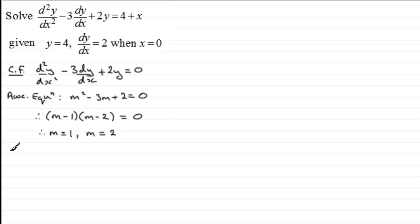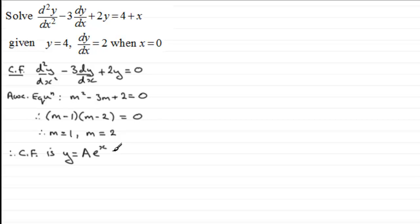Those two roots are m equals 1 and m equals 2. This means the complementary function CF is y equals a constant — let's call it a — times e to the power x, plus another constant b times e to the power 2x. So there's our complementary function.